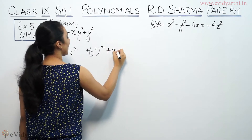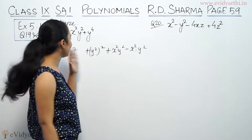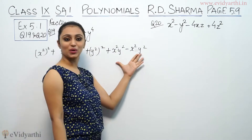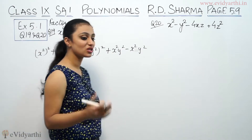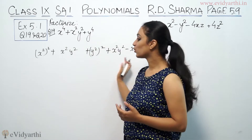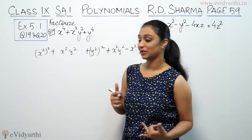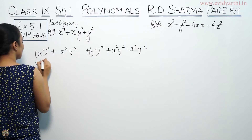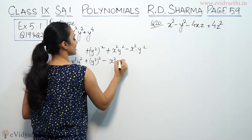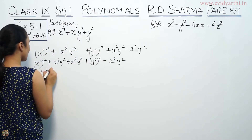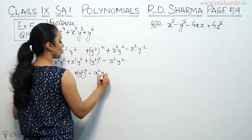If we add x²y² and subtract x²y², we keep the expression the same. So we can add x²y² and also add minus x²y² inside the expression to help us factor it.